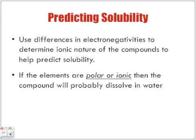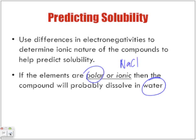If the elements are polar or ionic, then the compound will probably dissolve in water. In terms of solubility, if we know something is polar — water is also polar — so if it's polar, it will dissolve in water. Ionic compounds will dissolve in water, most of them. For example, sodium chloride will dissolve in water.